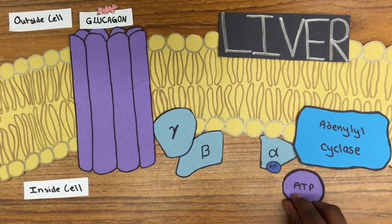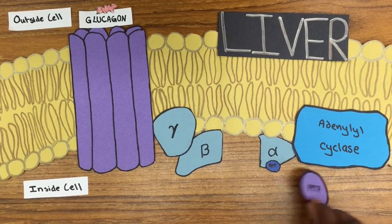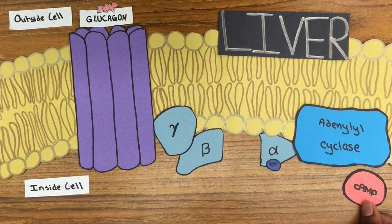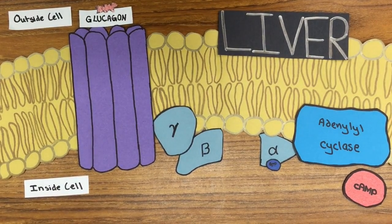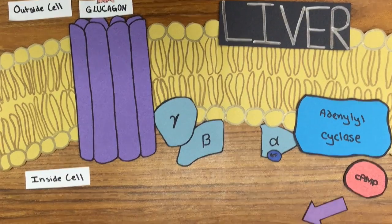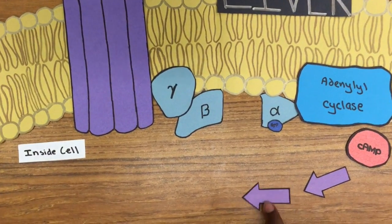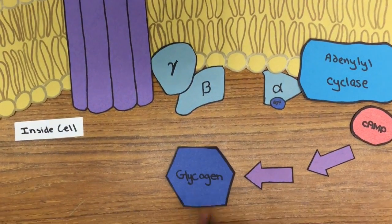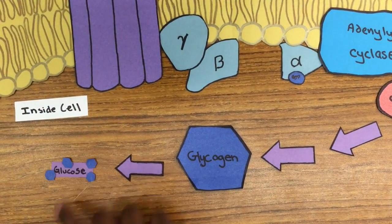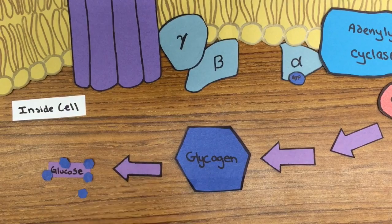The alpha subunit then activates the next enzyme in the cascade, adenylyl cyclase, which produces cyclic AMP, or cAMP, which then triggers a cascade that results in glycogen being broken down into glucose and transported out of the cell.